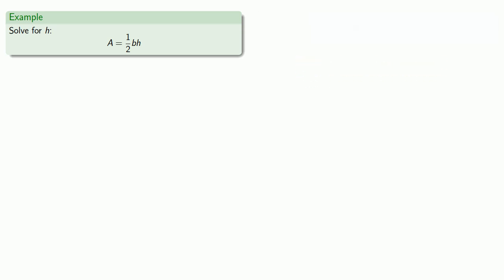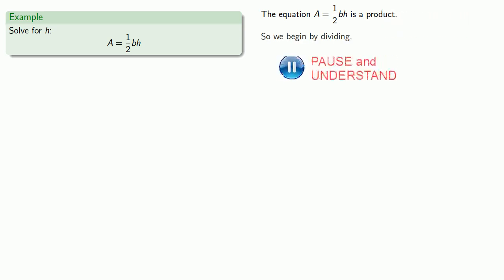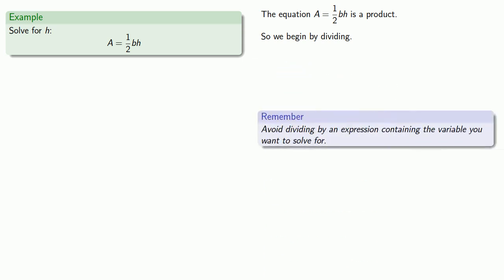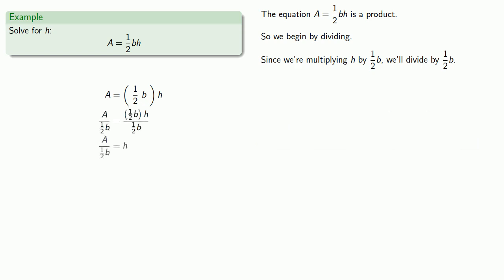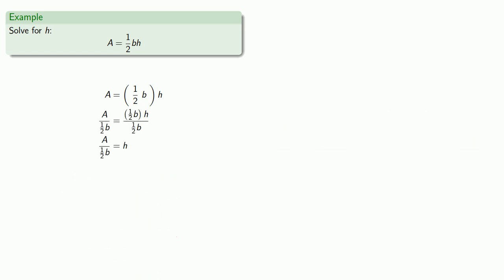If we take a look at the equation A equals one-half BH, we see that this is a product. And so we begin by dividing. Now remember, we need to be a little bit careful with division — we should avoid dividing by an expression containing the variable we want to solve for. So if we think about this equation as the product one-half times BH, we're multiplying H by one-half B. And so that means we'll divide by one-half B. Now we have H equal to a bunch of things that don't include H — we've solved for the variable.